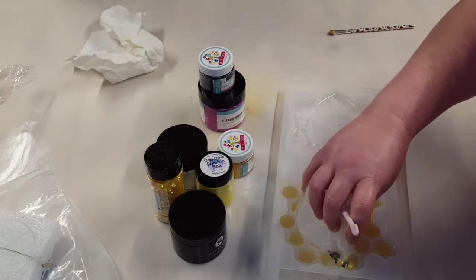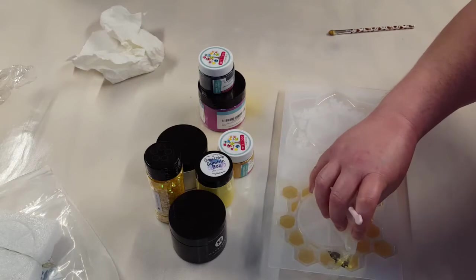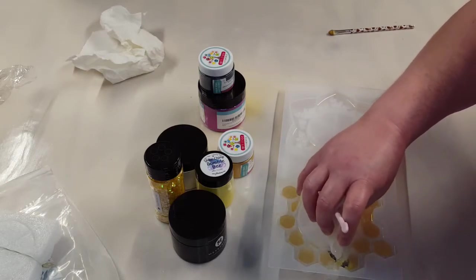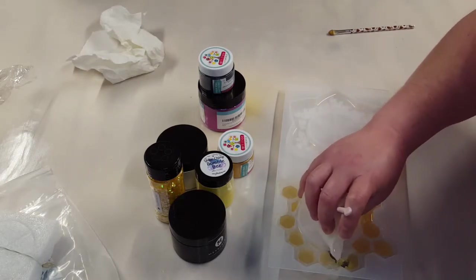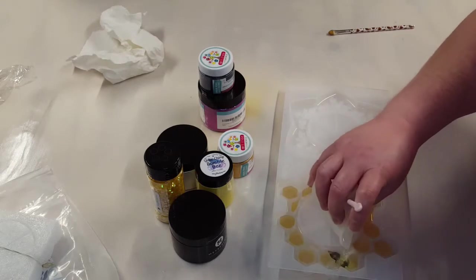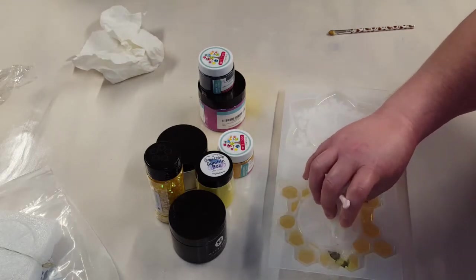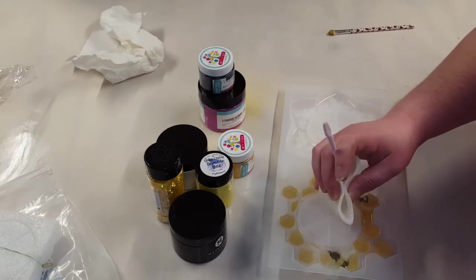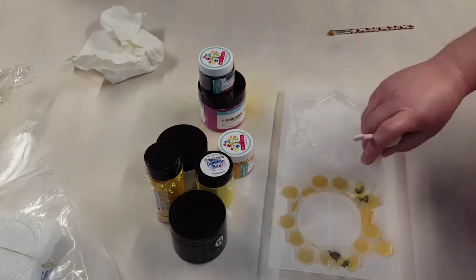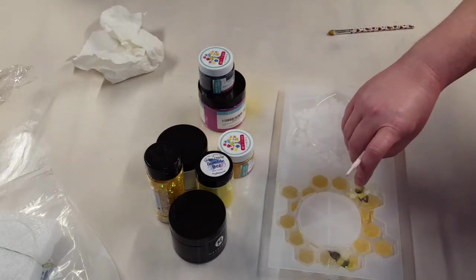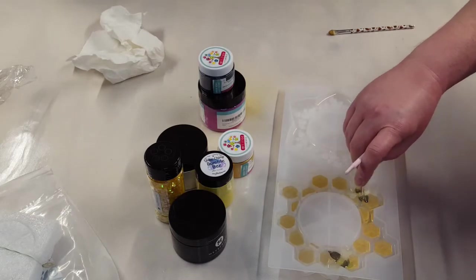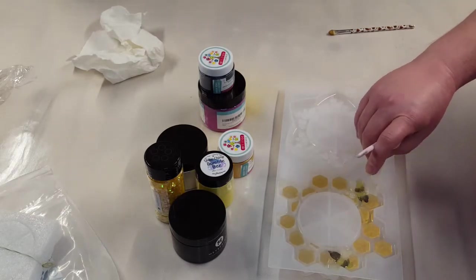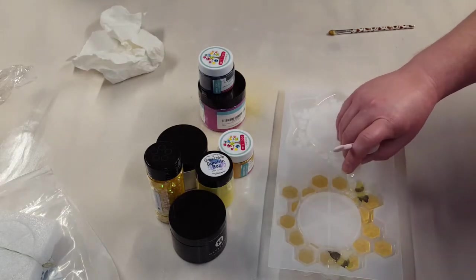And once that's done I'm going to use my resin that I have and just fill in the bee part of this mold. Just my two bees. And it's just clear resin like I said I had left over from another project. I'm just filling up my bees and I will let them cure before finishing the honeycomb part.